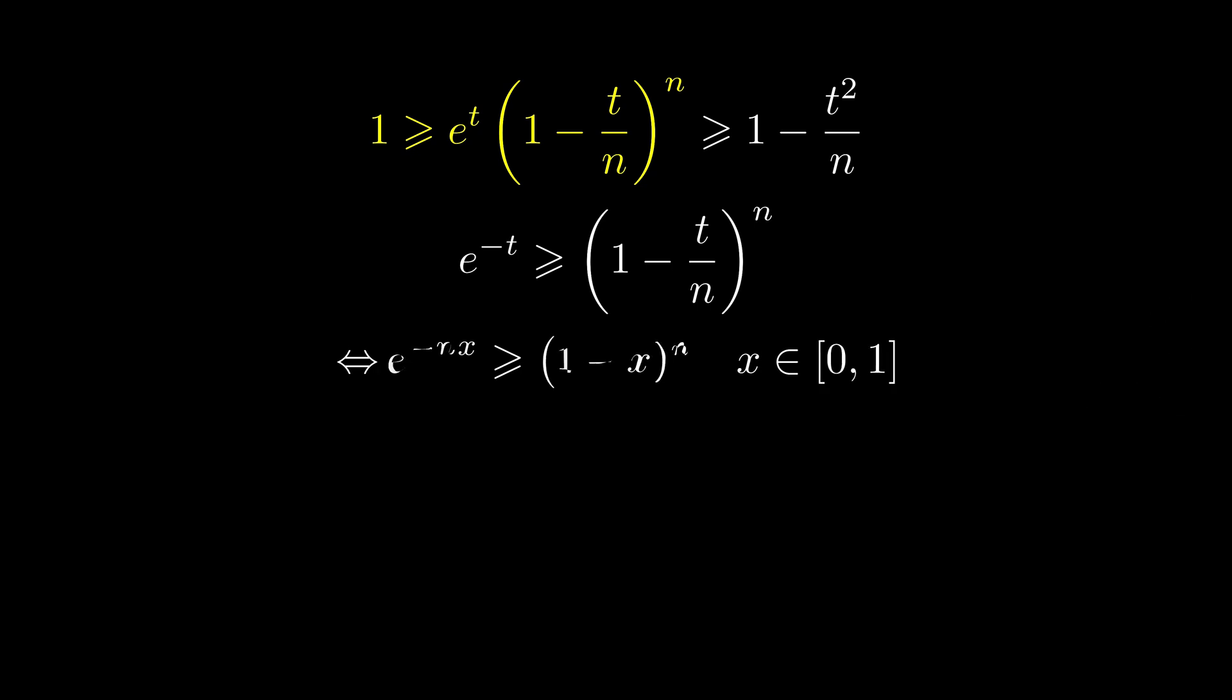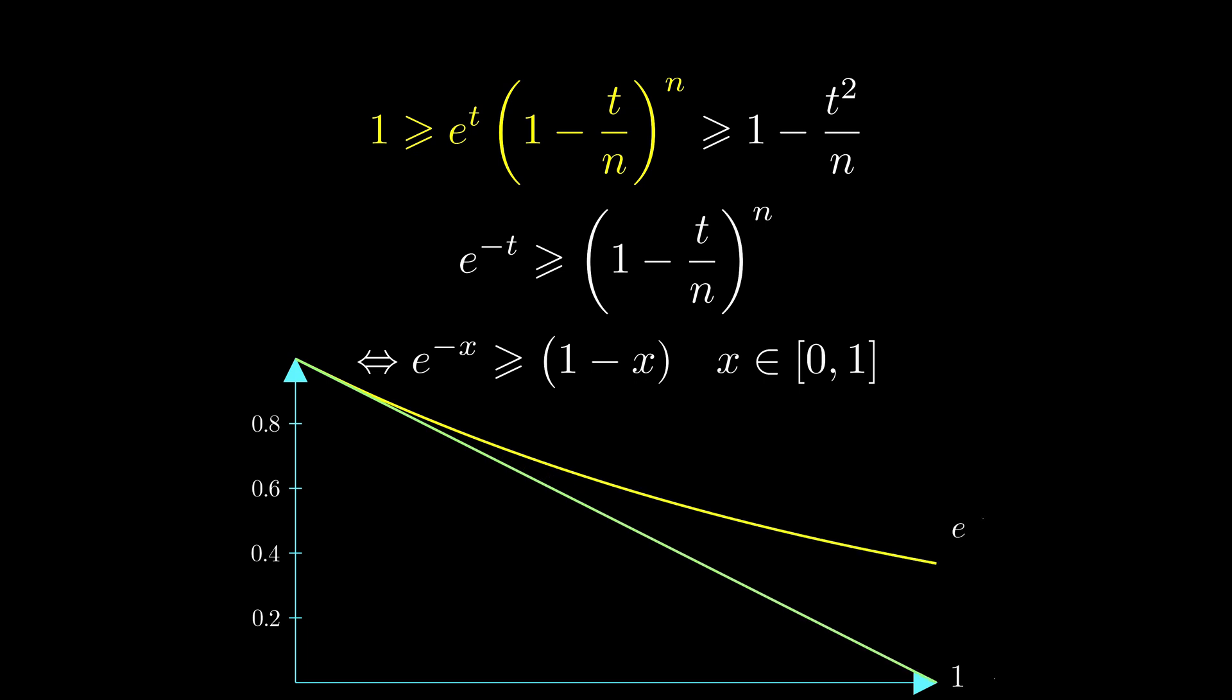Let's do a u-substitution. Remember, the original integral upper bound is n, so x is in range 0 to 1. Is this true? Yes, it's true. But I will leave it to you as an exercise. Here's the visualization. This concludes our first half of the proof.